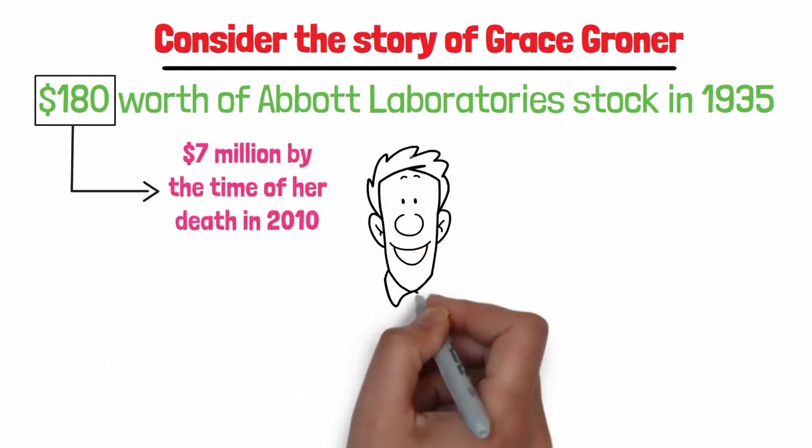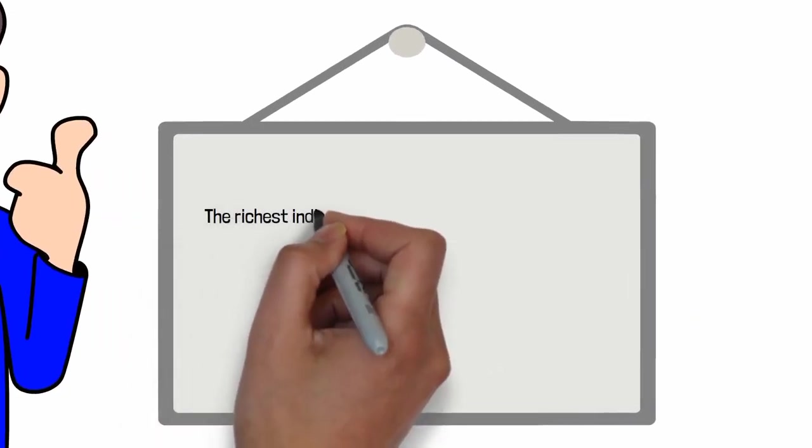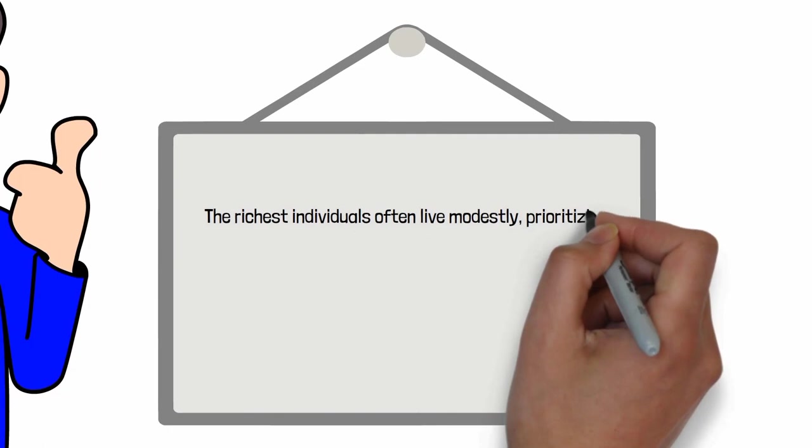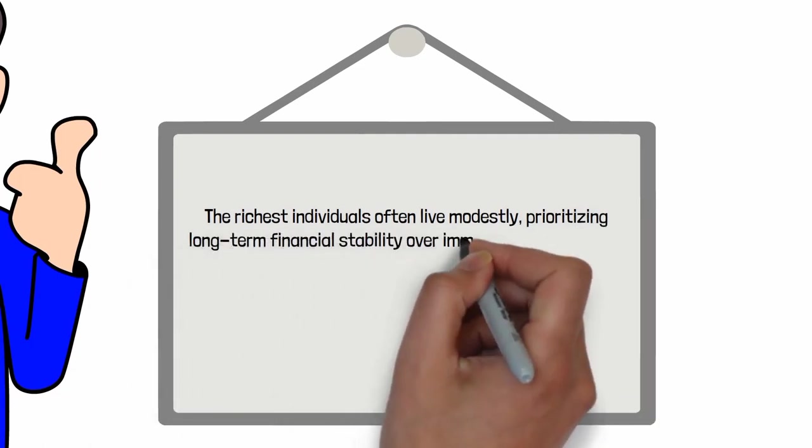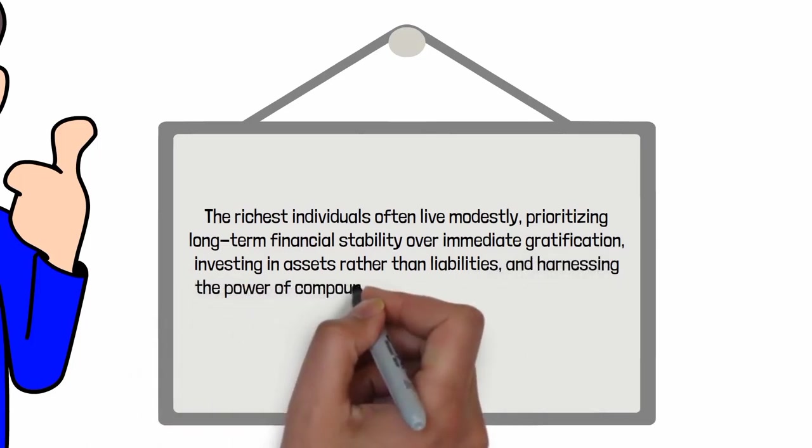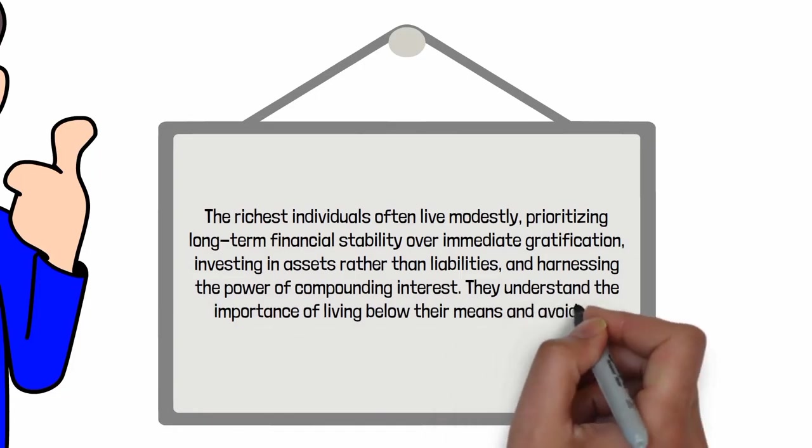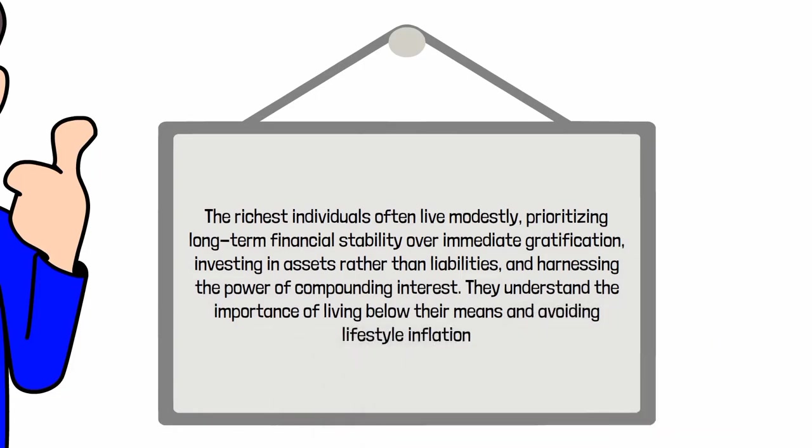As we wrap up this discussion, let's revisit the key points. The richest individuals often live modestly, prioritizing long-term financial stability over immediate gratification, investing in assets rather than liabilities, and harnessing the power of compounding interest. They understand the importance of living below their means and avoiding lifestyle inflation.